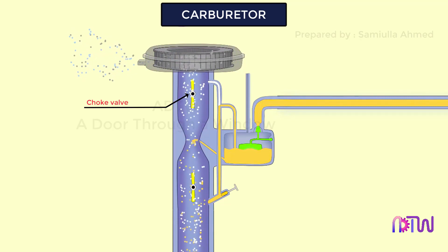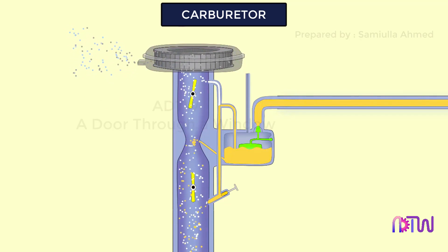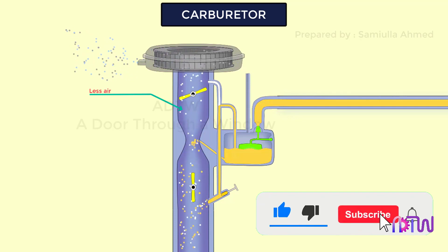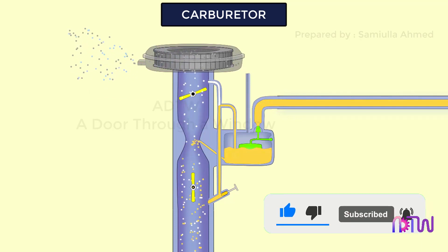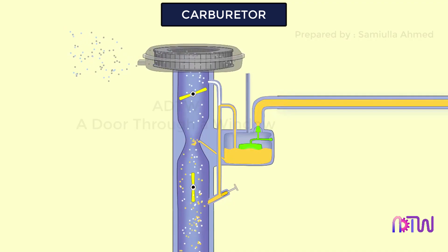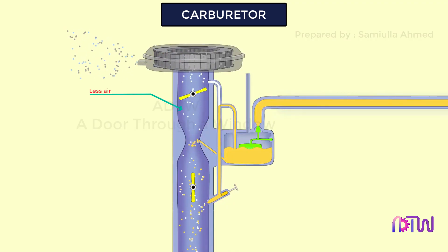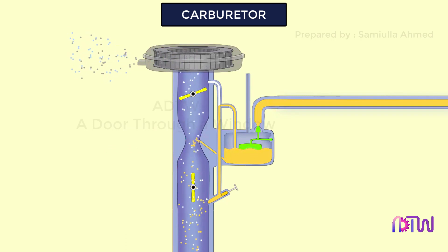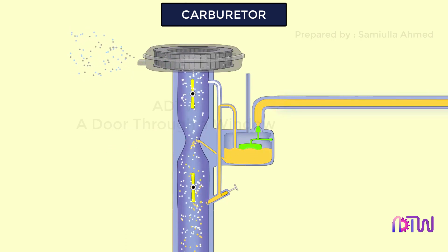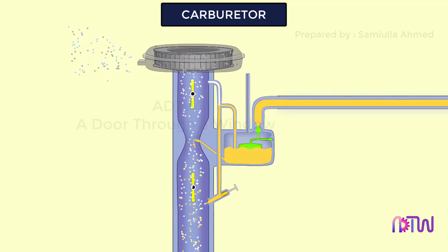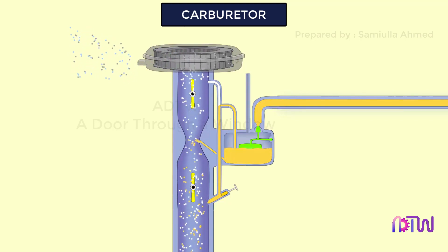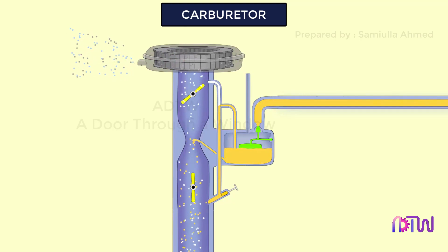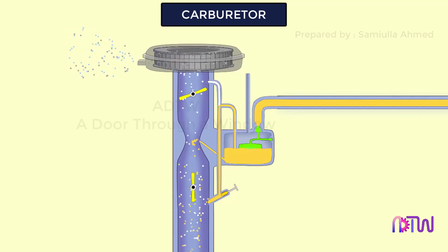Another butterfly valve is provided before the venturi tube called the choke valve. Its function is to choke or block the air supply, causing very little air to pass through. During the suction stroke, this creates a partial vacuum, drawing in less air and more fuel, producing a fuel-rich mixture. The choke valve is very helpful during cold starting, since at lower temperatures fuel does not vaporize and mix uniformly with air. Closing the choke valve provides more fuel and less air to the engine cylinder, supplying a fuel-rich mixture that helps start the engine in cold weather.